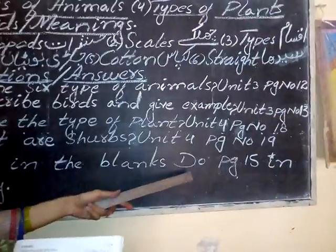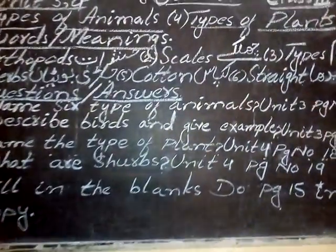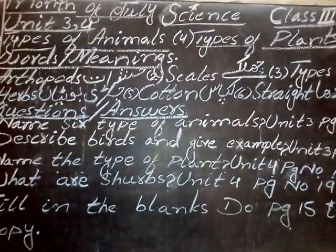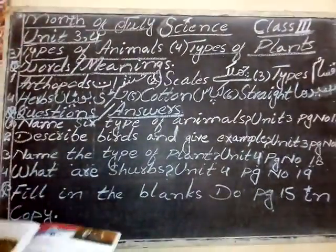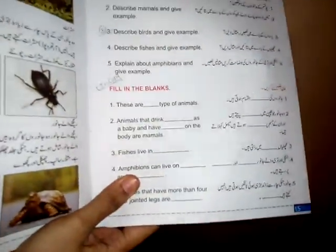Question number three: fill in the blanks. Page number 15 and copy. This is the blanks you can see here and fill in the blanks. This is today's class, science, month of July.